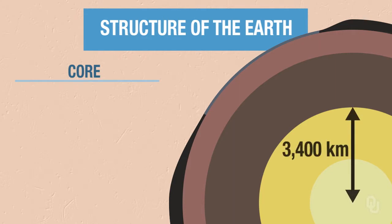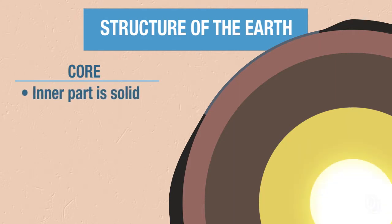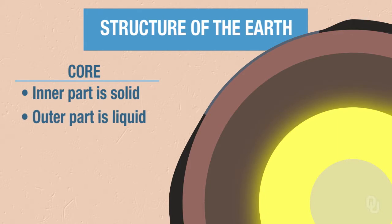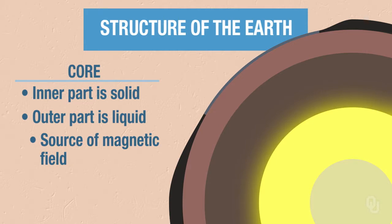The core is about 3,400 kilometers thick. The inner part is solid and the outer part is liquid. That outer liquid part of the core is the source of the magnetic field, and we'll talk more about the magnetic field in one of our subsequent videos.